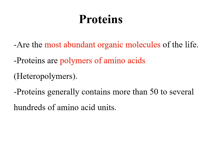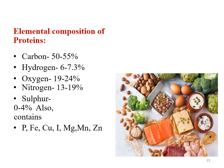Proteins are the most abundant yet most complex biomolecules of life — they are heteropolymers of amino acids, generally containing more than 50 to several hundred amino acid units. The main elemental composition of proteins includes approximately 50–55% carbon, 6–7.3% hydrogen, 19–24% oxygen, 13–19% nitrogen, and 0–4% sulfur. They also contain phosphorus, iron, copper, iodine, magnesium, manganese, and zinc in their structure in trace amounts.